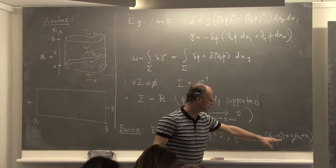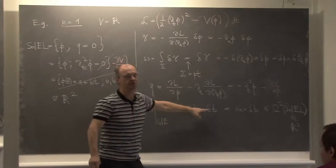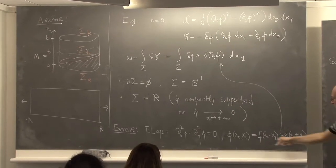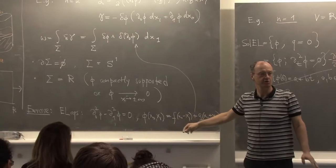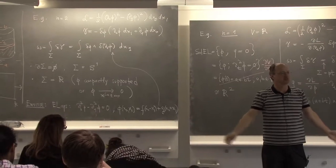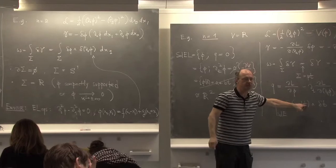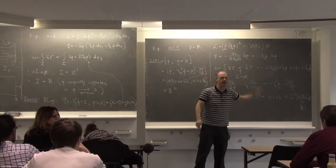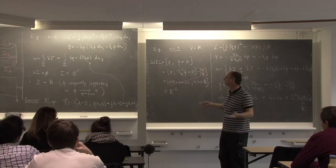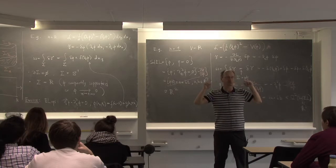As an exercise: the Euler-Lagrange equation for this Lagrangian is the wave equation ∂_0^2 phi - ∂_1^2 phi = 0. In 2D the general solution is phi(x^0, x^1) = f(x^0 + x^1) + g(x^0 - x^1), two waves traveling left and right. Substitute this back into the two-form formula: although the expression a priori depends on x^0, it should turn out independent — verify this, as it did in the mechanics example.